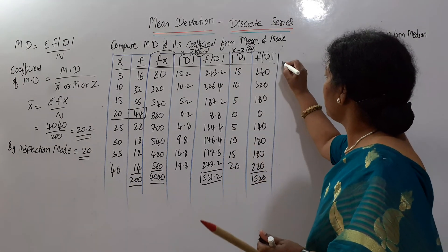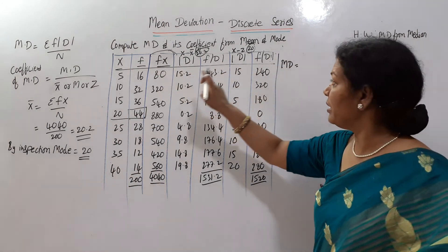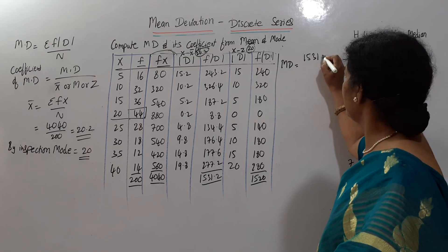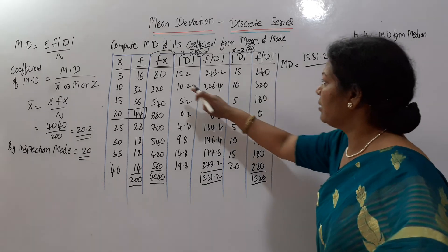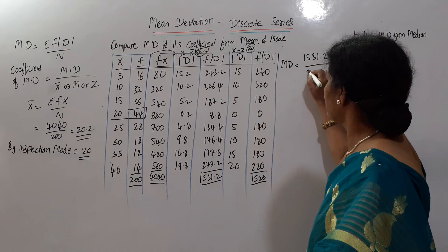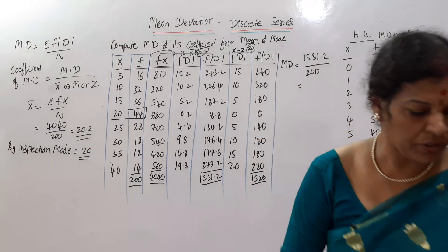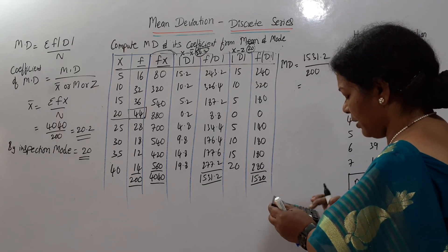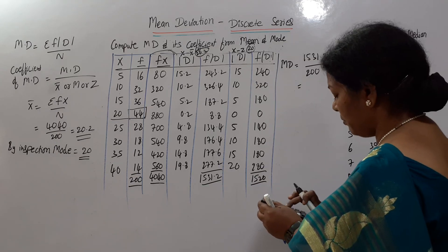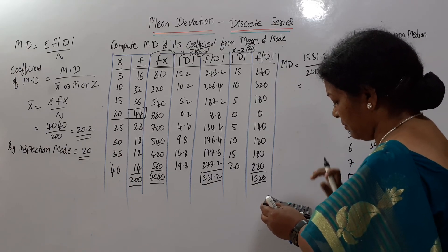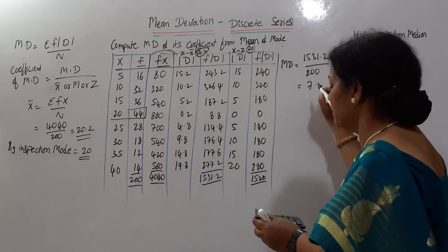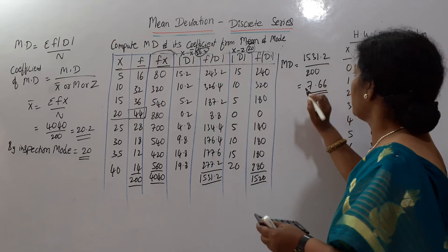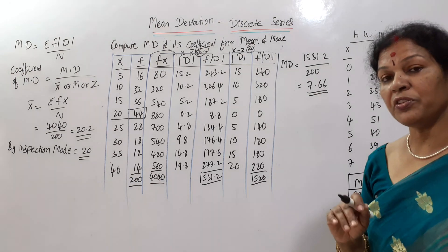Mean deviation = sigma f into mod d divided by n. The total of f into mod d is 1531.2, divided by n which is 200, giving us 7.66. So mean deviation from mean is 7.66.